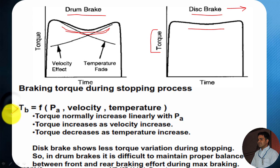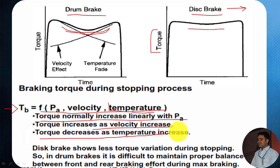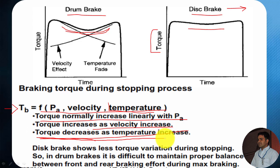From this plot we can understand that brake torque is a function of actuation force, velocity of the vehicle or the wheels, and temperature. During brake application some heat is generated. Torque normally increases linearly with the actuation force applied; torque increases as velocity increases; and torque decreases as temperature increases because as temperature increases the coefficient of friction mu changes, and due to this reduction in mu we get less brake torque. The disc brake shows less torque variation during stopping, so in drum brake it is difficult to maintain proper balance between front and rear braking effort during maximum braking.